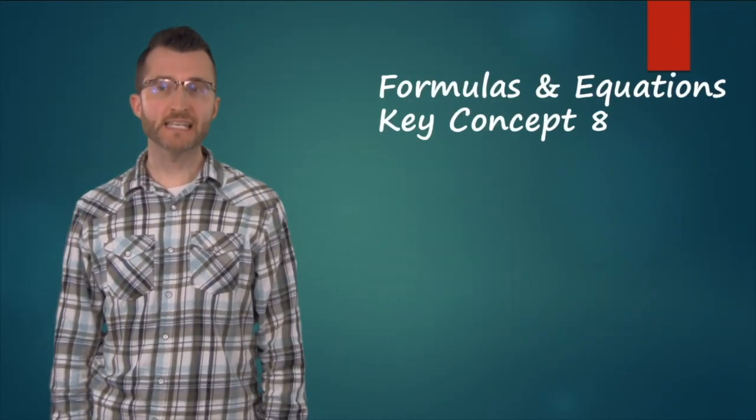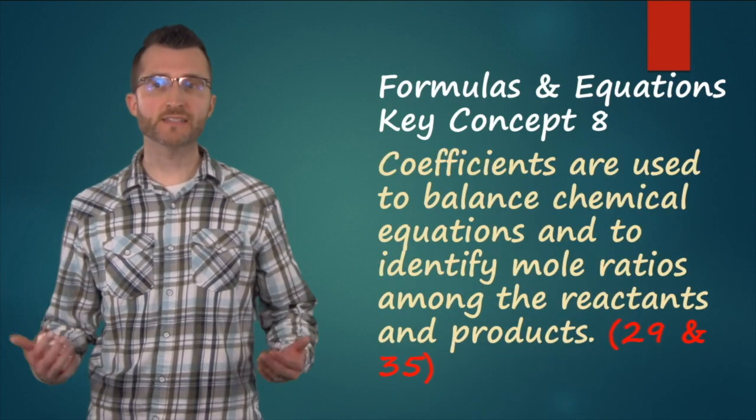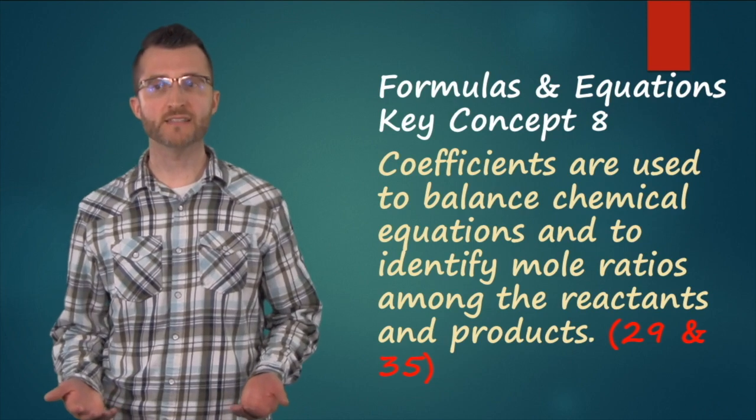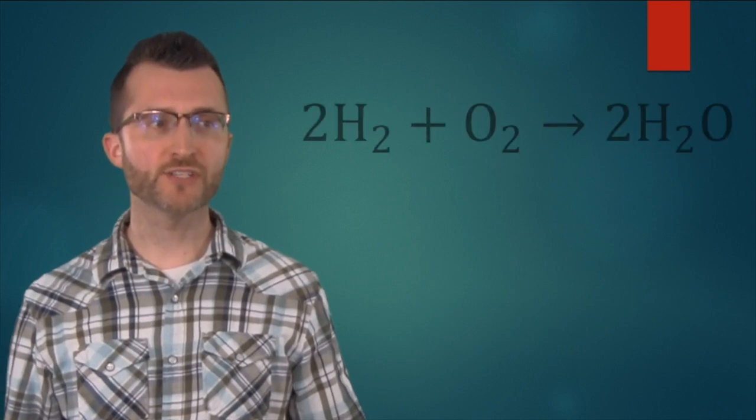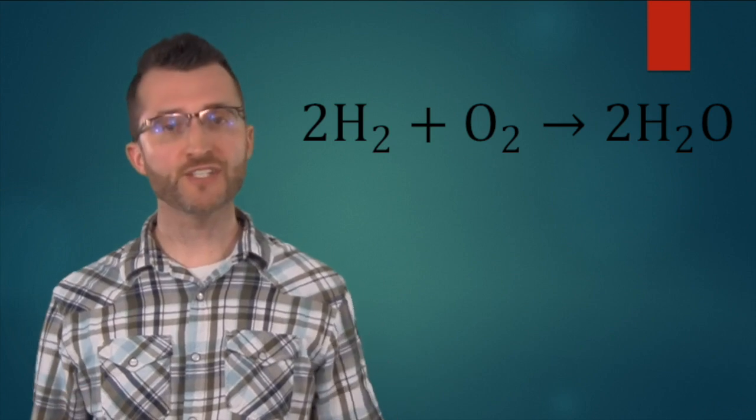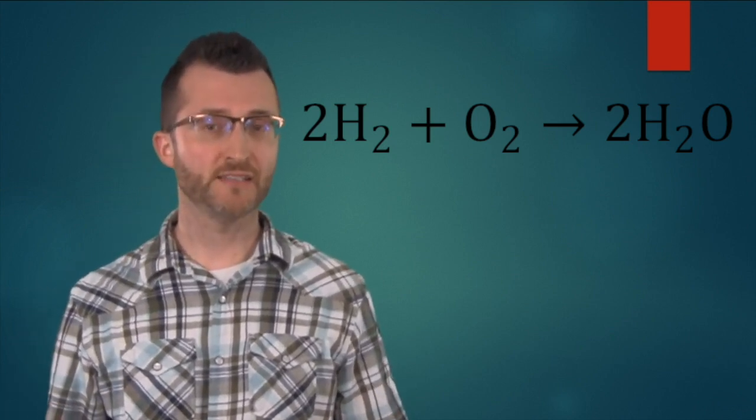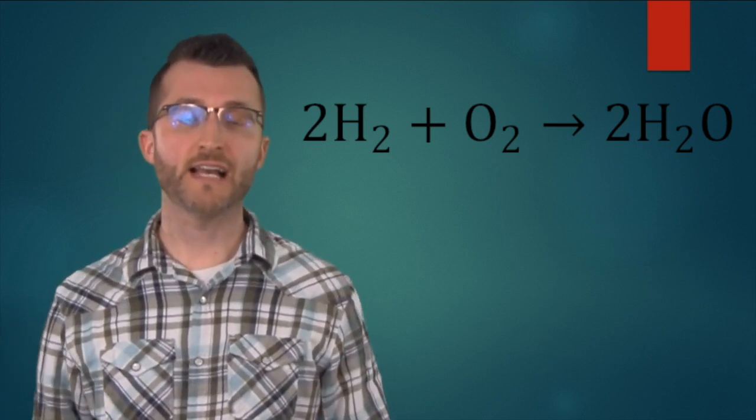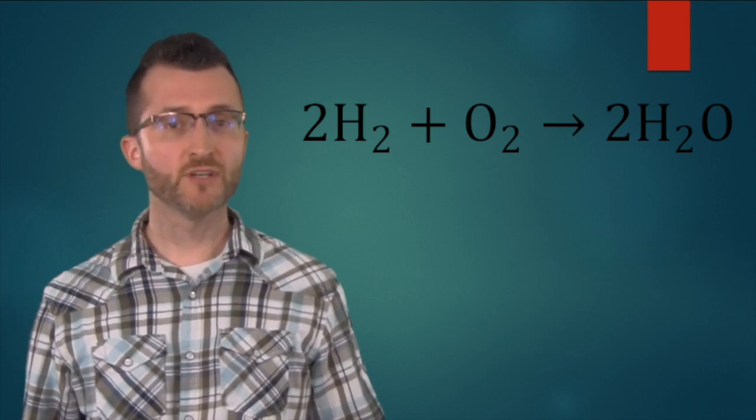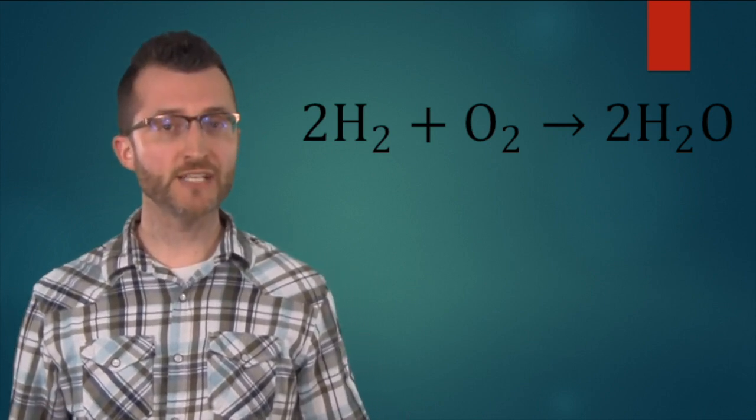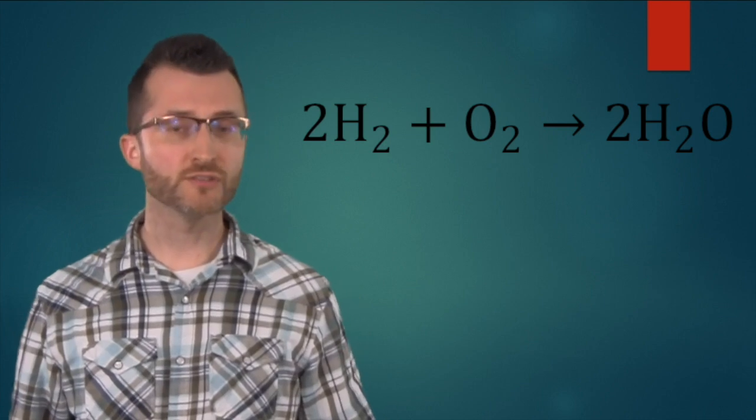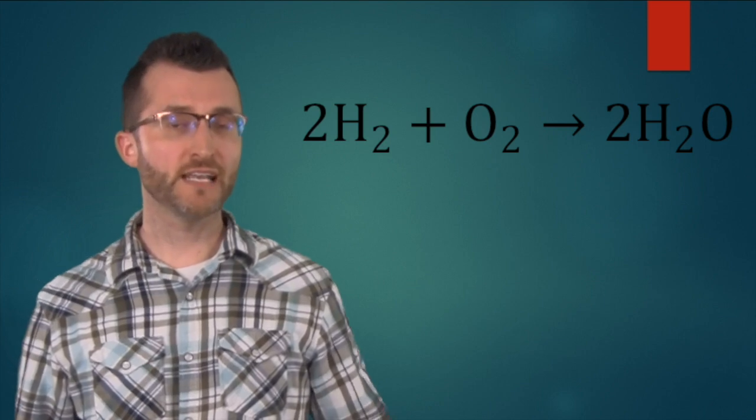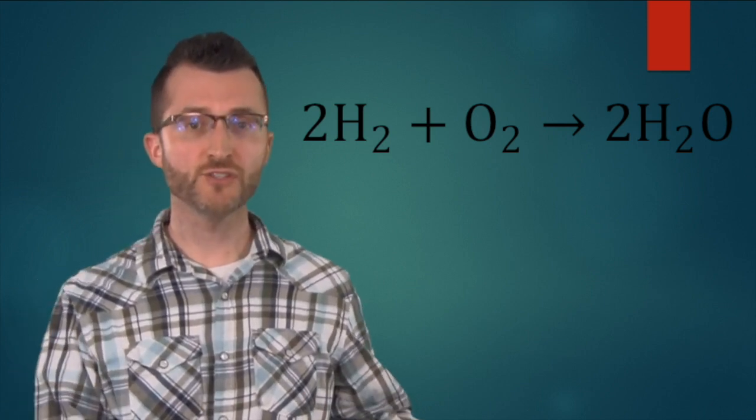Formulas and equations key concept 8. Coefficients are used to balance chemical equations and to identify mole ratios among the reactants and products. When we look at a chemical equation, we can think of the coefficients as representing the number of molecules reacting, but we can also think of the coefficients as representing the number of moles reacting. In our example, we have two moles of hydrogen H2 reacting with one mole of oxygen O2 to make two moles of water H2O. In other words, they are in a two to one to two ratio.